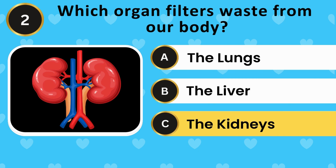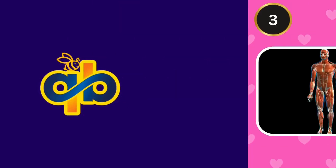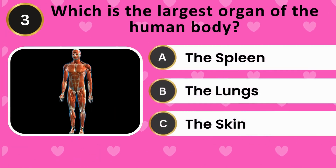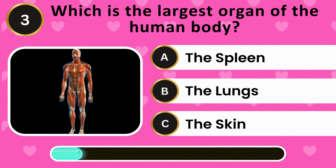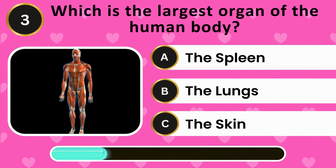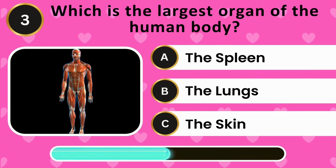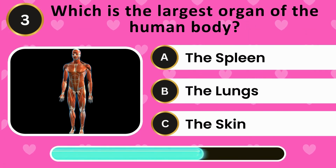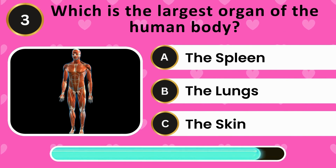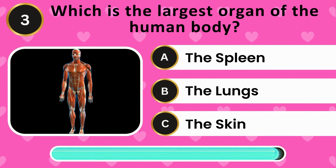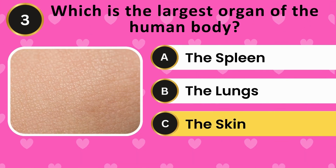Which is the largest organ of the human body? The spleen, the lungs, the skin. The answer is the skin.